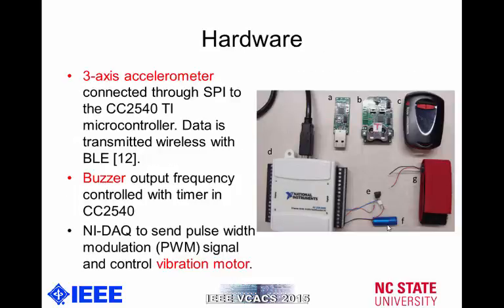The system consists of three main components: a three-axis accelerometer, a buzzer, and a vibration motor. The three-axis accelerometer is placed on the chest of the patient, and the sensor data is transmitted via Bluetooth Low Energy using the CC2540 Texas Instruments microcontroller. To provide the alerts, we use a buzzer, which we can control for frequency and duration of sound from the same microcontroller. In addition, we provide haptic feedback using a vibration motor placed on the wrist of the patient, controlled using a data acquisition card.